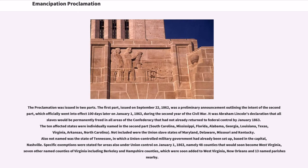The proclamation was issued in two parts. The first part, issued on September 22, 1862, was a preliminary announcement outlining the intent of the second part, which officially went into effect 100 days later on January 1, 1863, during the second year of the Civil War. It was Abraham Lincoln's declaration that all slaves would be permanently freed in all areas of the Confederacy that had not already returned to federal control by January 1863. The ten affected states were individually named in the second part.